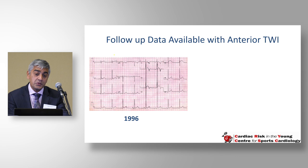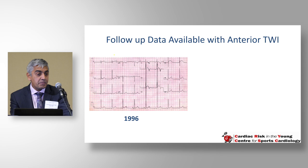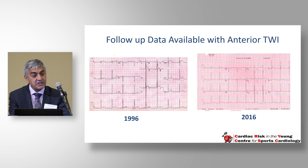We have follow-up data of up to 20 years on these individuals. Here is an ECG from 1996 when someone was 16 years old, showing voltage criteria for left ventricular hypertrophy and typical repolarization changes in V1 to V3. His ECG 20 years on shows the T-wave inversion in V1 to V3 has deepened, but his structural heart remains completely the same across multiple MRI scans showing no change in cardiac dimensions.